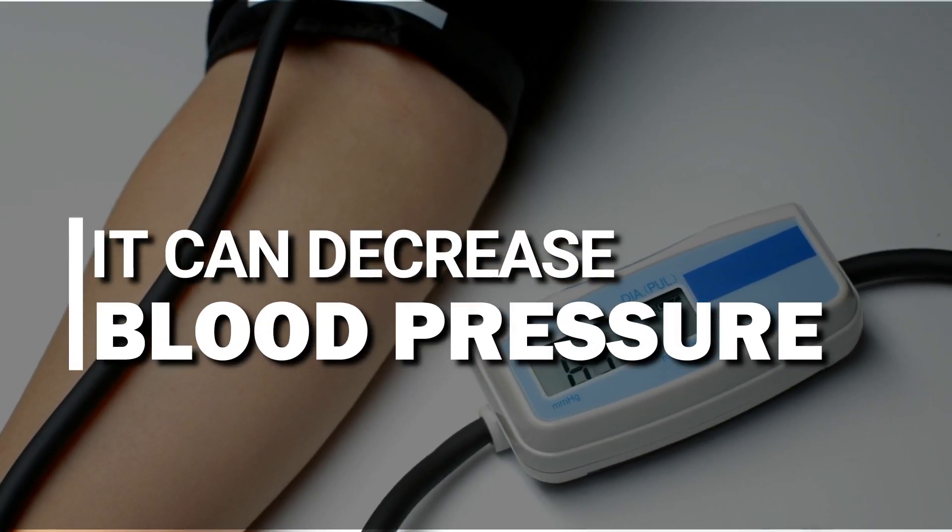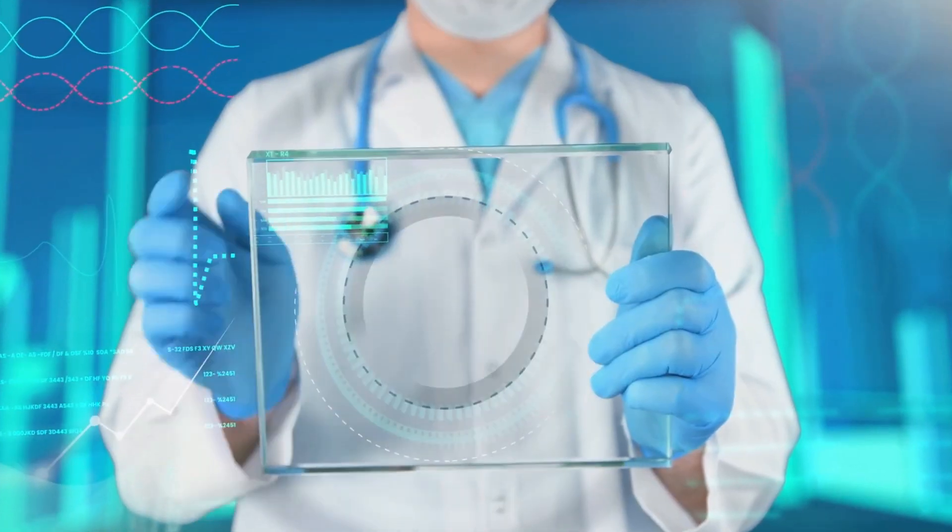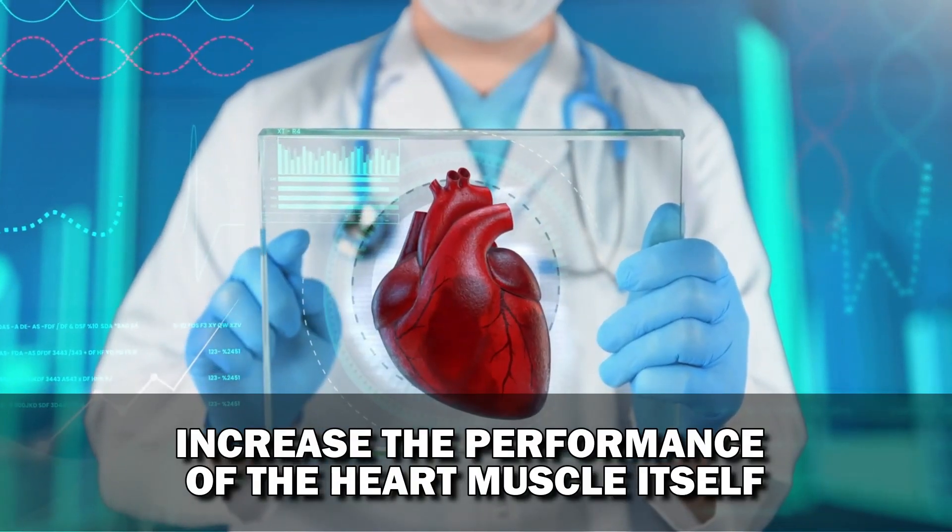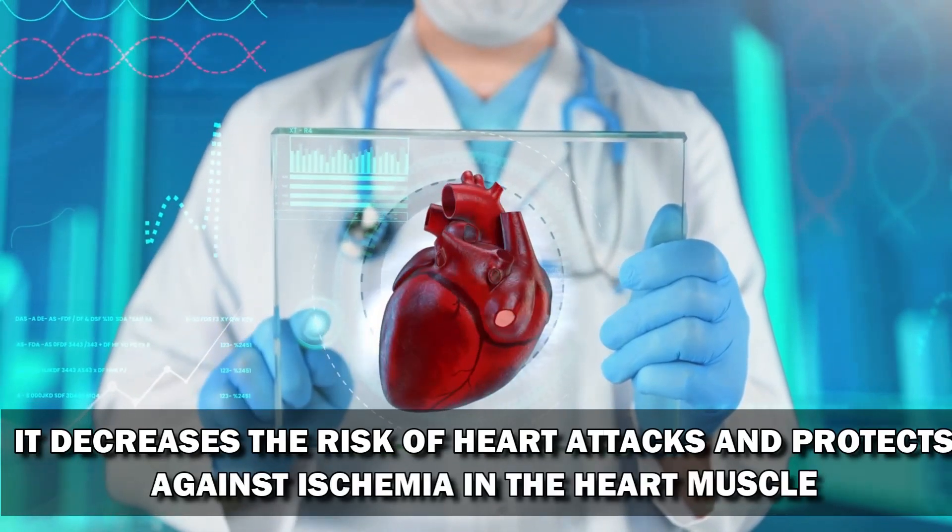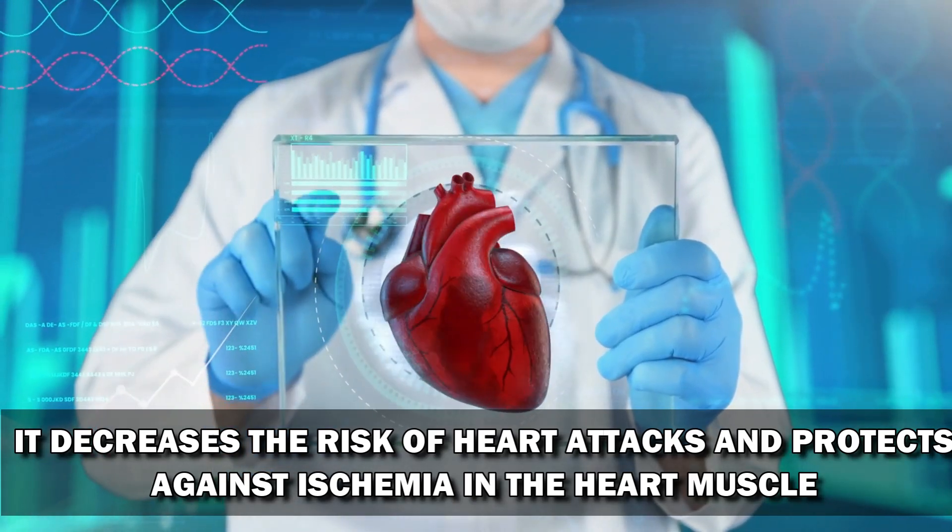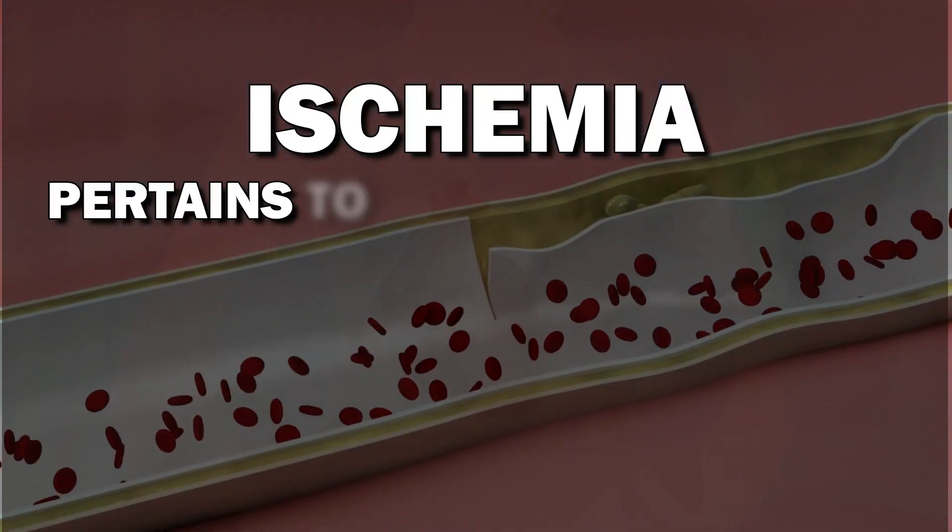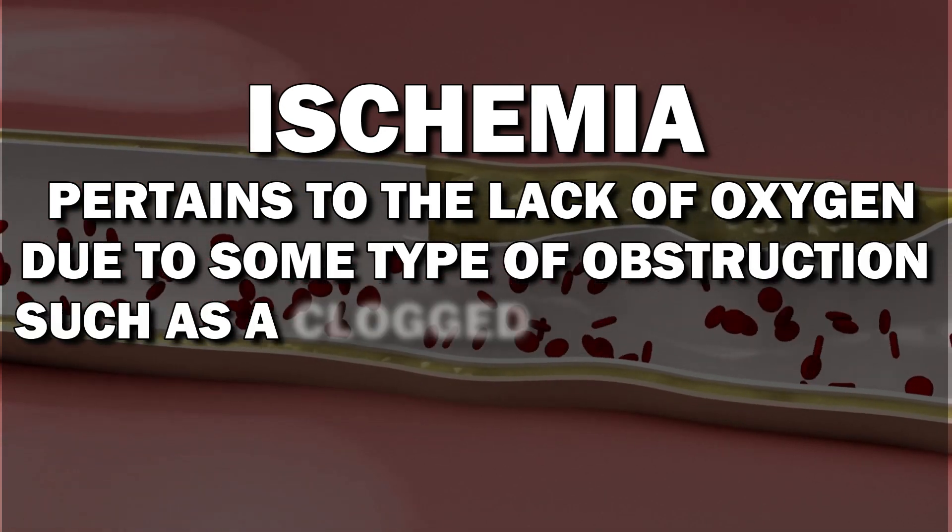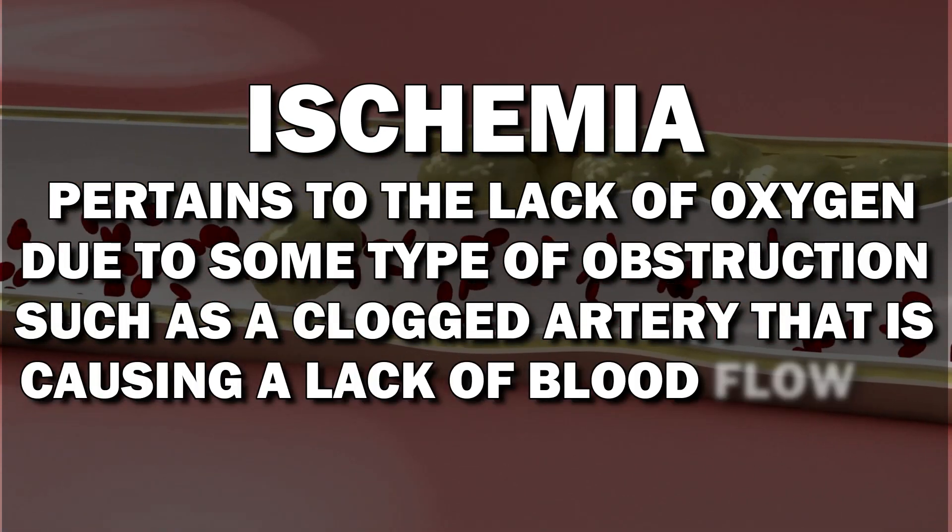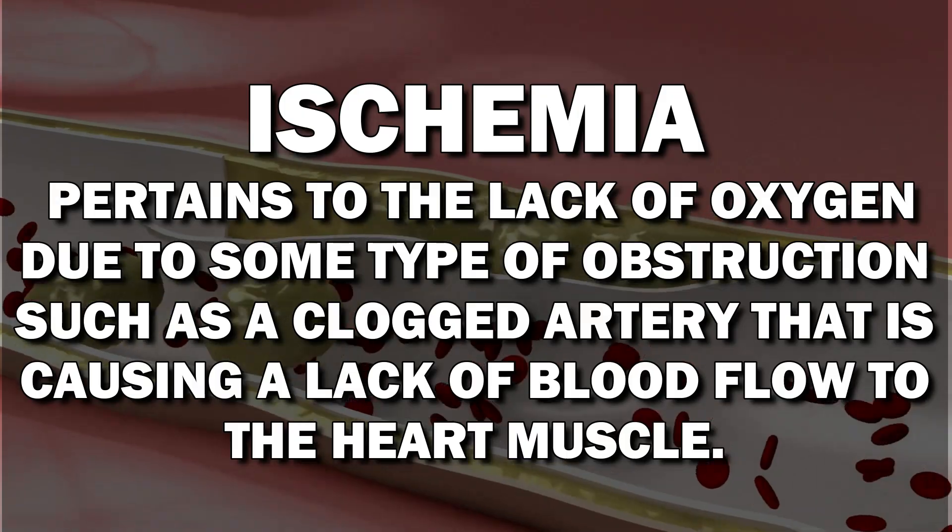Number two, it can decrease blood pressure. Berberine can increase the performance of the heart muscle itself. It decreases the risk of heart attacks and protects against ischemia in the heart muscle. Ischemia pertains to the lack of oxygen due to some type of obstruction such as clogged artery that is causing a lack of blood flow to the heart muscle.